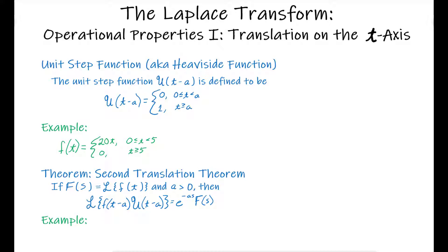The first thing we're going to talk about is how do we turn things on and off with equations. The answer lies in a thing called the unit step function, also called the Heaviside function, named after Oliver Heaviside. The unit step function is written with a script U. Our unit step function of t minus a is defined as the piecewise function 0 when t is between 0 and a, and 1 whenever t is greater than or equal to a — the point where something gets turned on, or turned off.